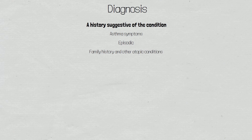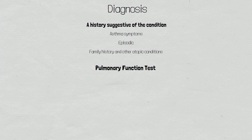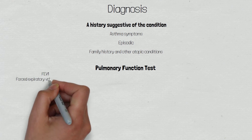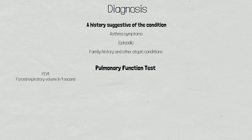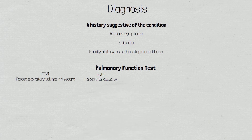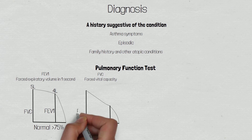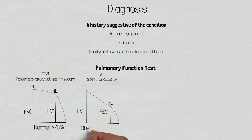To diagnose asthma, a pulmonary function test is conducted, and this consists of two measurements. The first is the volume of air a patient can exhale as fast as possible in one second, and is a measurement of how easily air can flow out of the lungs. It is denoted as FEV1, and stands for forced expiratory volume in one second. The second is the forced vital capacity, and is a measurement of the total amount of air a patient can take into their lungs, calculated by measuring how much air is exhaled after full inhalation. An obstructive lung disease is diagnosed when the FEV1 is less than 75% of the forced vital capacity. This demonstrates a patient has a condition which affects the passage of air during exhalation.